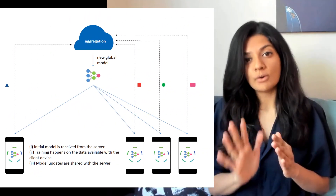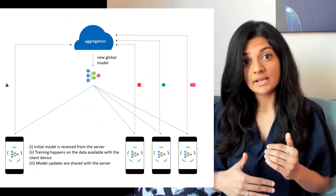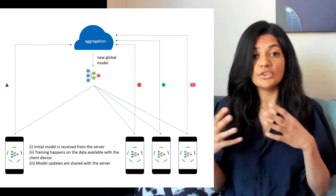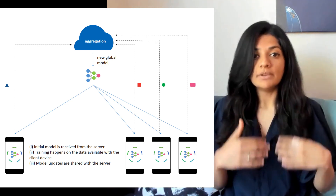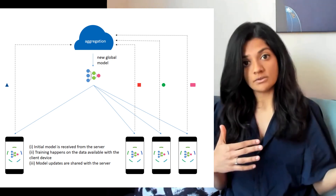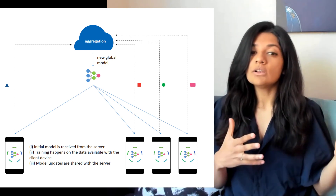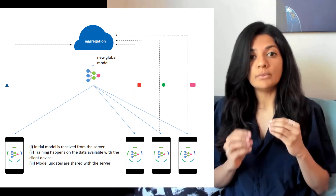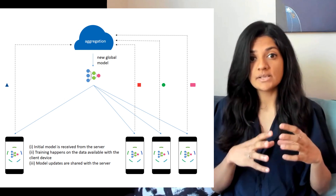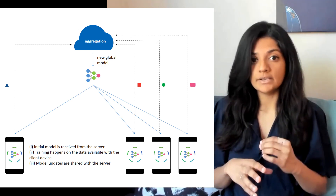The initial model weights are sent to the device and the model is tuned with the user's data. The updated model weights are sent back to the server. The models are trained within minutes and only on eligible devices which contain the needed data.